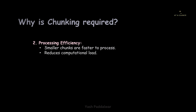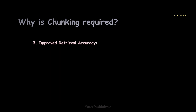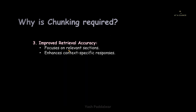The third reason chunking is required is improved retrieval accuracy. If we use the process of chunking, the retrieval will focus only on the relevant sections. Once the perfect match is found, only that particular chunk will be retrieved as the final result and sent to the large language model for generation. This enhances context-specific responses — if a user asks a particular query, they will get context-specific responses only, with no out-of-scope information returned.